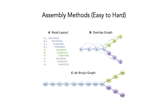There are a number of different methods for assembling genomes, and we'll look briefly at three of them going from easy to hard. The first is a read layout method, probably the one you automatically think of when you think of genome assembly. The second is the overlap graph method, which is a bit more complex. The third — which we'll look at in much more detail — is the de Bruijn graph method, which uses graph theory to piece bits of the genome together. It's harder to understand but very commonly used and quite powerful.